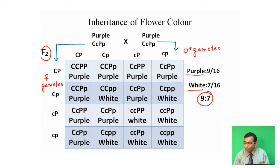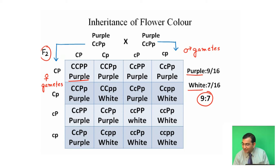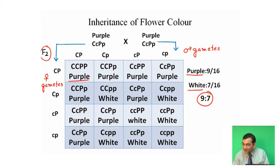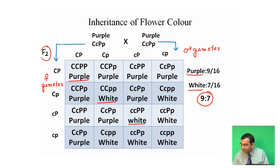When two dominant genes are present, the flower becomes purple. When only one dominant gene is present, either C or P, it becomes white. When double recessive is present, that is ccpp, it also becomes white.